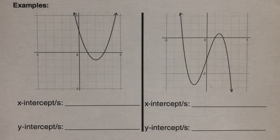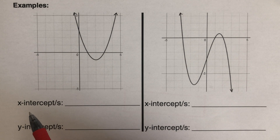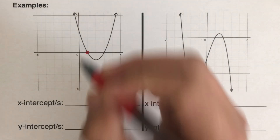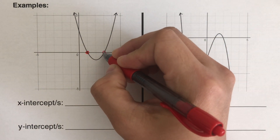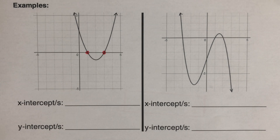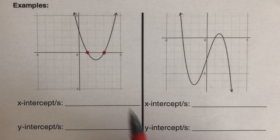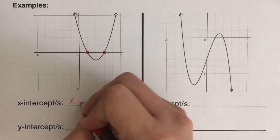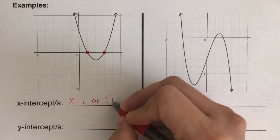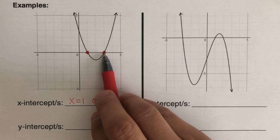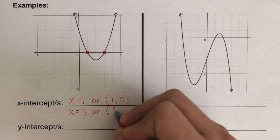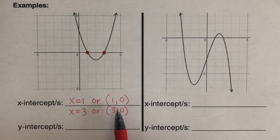Let's go over the next problem. For the x-intercept, we're looking at where the graph crosses the x-axis — and here we actually have two x-intercepts. It doesn't have to be just one; sometimes there are none, sometimes there are three or four. In this case, the first x-intercept is x equals 1, or in coordinate form (1, 0), and the second x-intercept is x equals 3, or in coordinate form (3, 0).